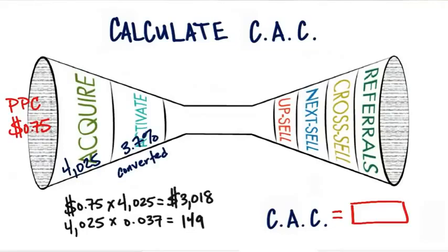And now if we divide the $3,018 by these 149 activated customers, we find out that the customer acquisition cost — the CAC — equals about $20, more precisely about $20.27.